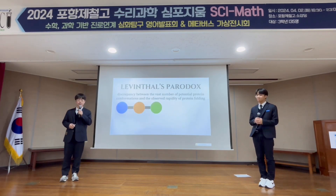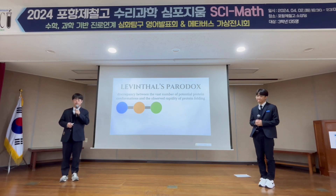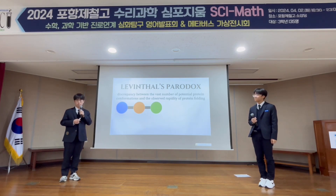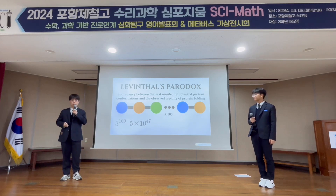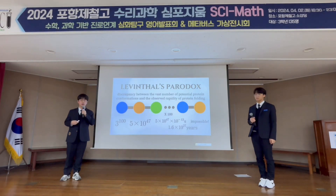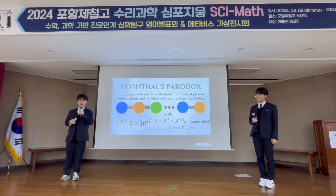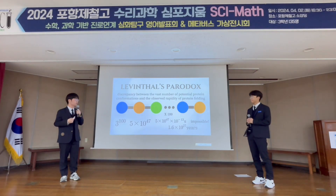To answer this question, first let's take a look at the Levinthal's paradox. How do proteins make the transformation from various amino acid sequences to their own? One possible explanation would be trying every possible form to find the most energetically favorable one. How long would such a random search take? If we assume a small protein with 100 amino acids, which could take three different forms, the total number of structures would be enormous, and the total time for searching would be impossibly long. It would take too much time for even a small protein to fold properly by randomly attempting all possible forms. However, the time for proteins in the real world to fold is very short in comparison. This enormous discrepancy between the vast number of potential protein conformations and the observed rapidity of protein folding is called Levinthal's paradox.